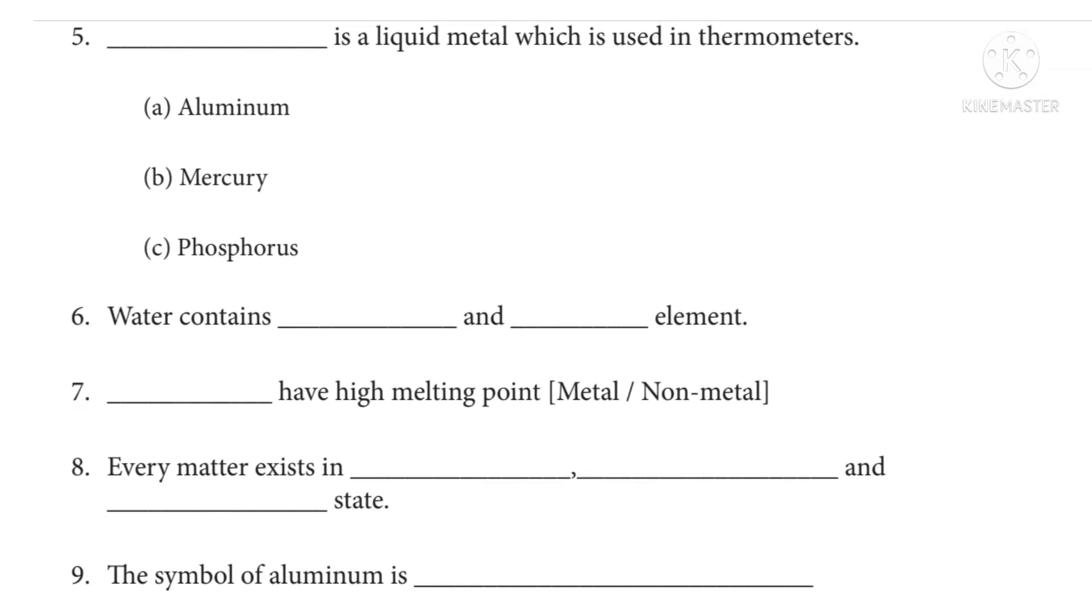Fifth question: dash is a liquid metal which is used in thermometer. Options A: aluminium, B: mercury, C: phosphorus. The correct answer is option B, mercury.